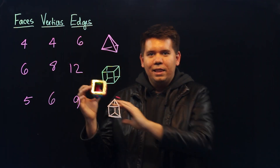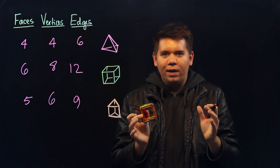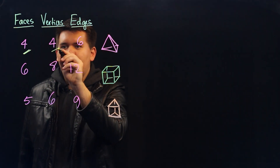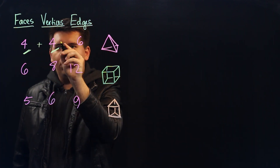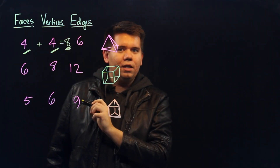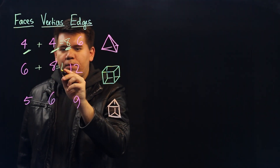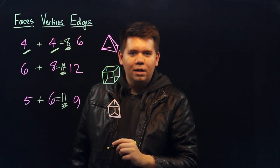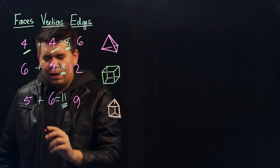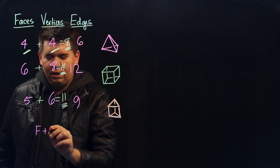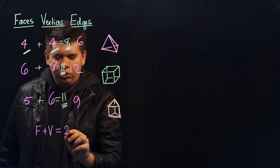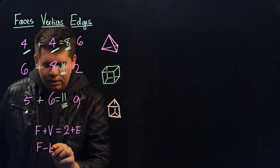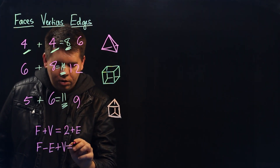Euler's insight was that there's a pattern here. If you take any such convex polyhedra, you will get that if you sum the number of faces with the number of vertices — 4 plus 4 — it always comes out to be 2 more than the number of edges. 6 plus 8 is 14, which is 2 more than the number of edges; 5 plus 6 is 11, also 2 more than the number of edges. That is, the number of faces plus the number of vertices equals 2 more than the number of edges. Or rearranged: the number of faces minus the number of edges plus the number of vertices equals 2.